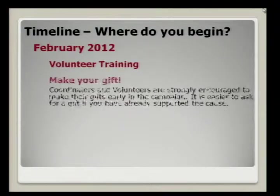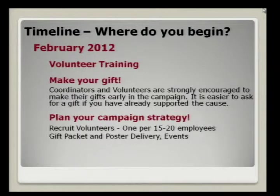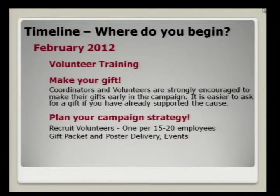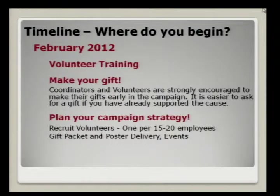To the timeline. Where do we begin? We've already begun — you're at the training, so you can cross that off your list. The next thing is to make your own gift. It's always easiest when you're going to ask someone else to do something if you've already done it yourself. The online giving site is already up and running. If you have a payroll deduction, it's ongoing, so you can go online to check and make changes or make a credit card gift.